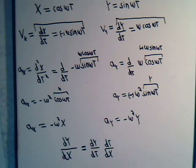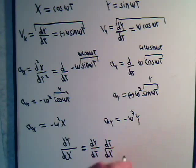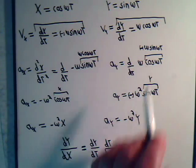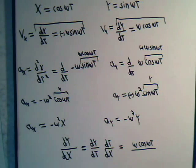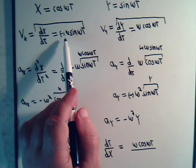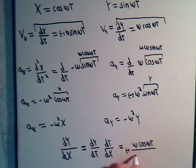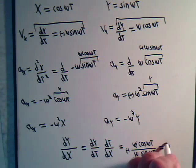Do we know what these values are? Sure we do. dy/dt is ω times cosine of ωt, divided by — since dt/dx is 1 over dx/dt — we put dx/dt in the denominator, so that's minus ω times the sine of ωt. The ω's cancel and we can say this would be equal to minus cosine divided by sine, the cotangent of ωt. That is what dy/dx would be.